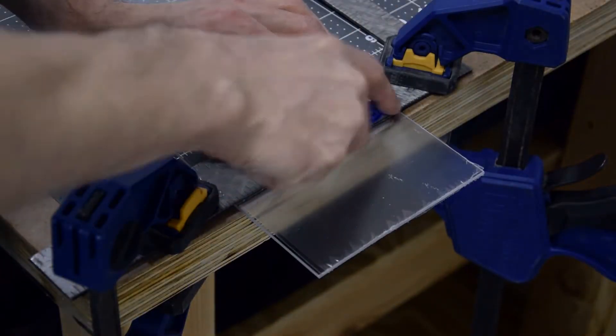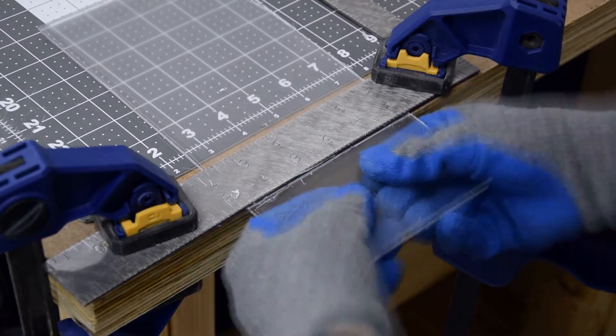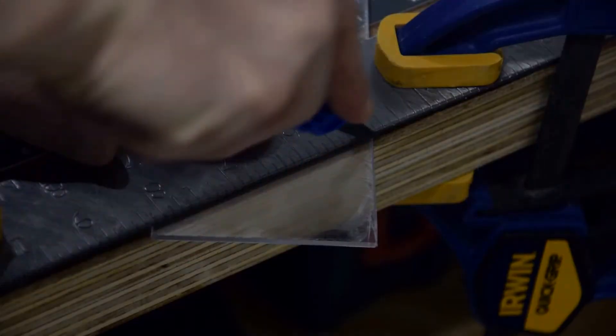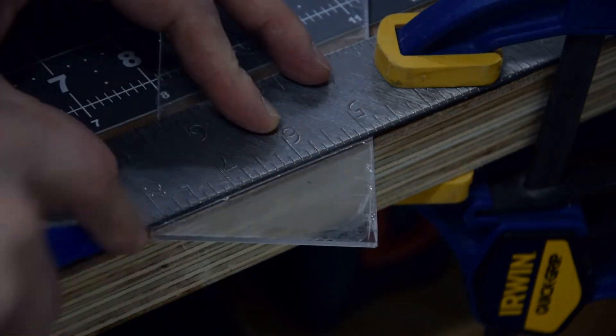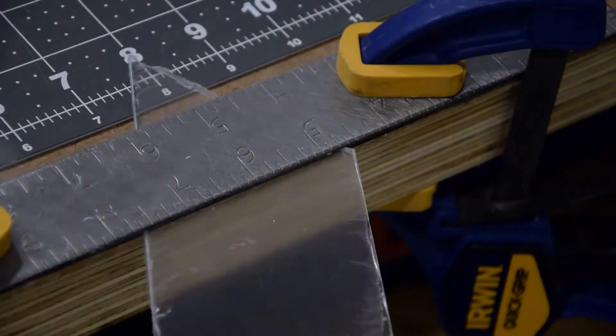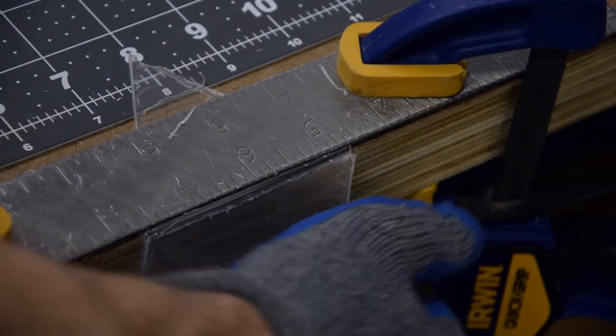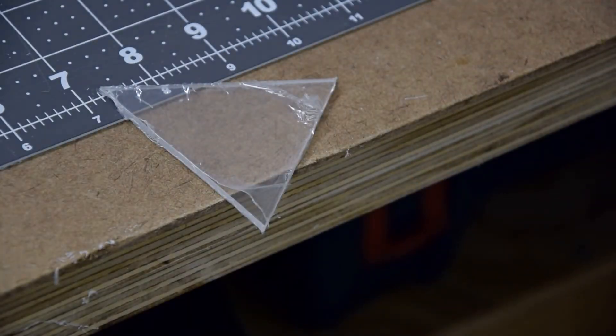I still have a bunch of the 2.4 millimeter acrylic left over from my picture frame video, so I used a scrap piece of that. I cut out a triangle without worrying about the size or angles. The exact dimensions don't really matter, because I will design the rest of the project around this piece of acrylic.